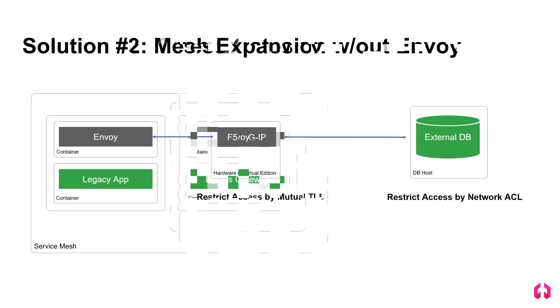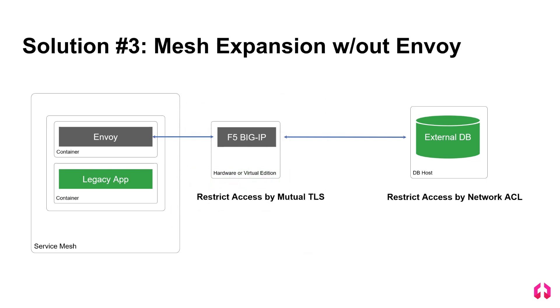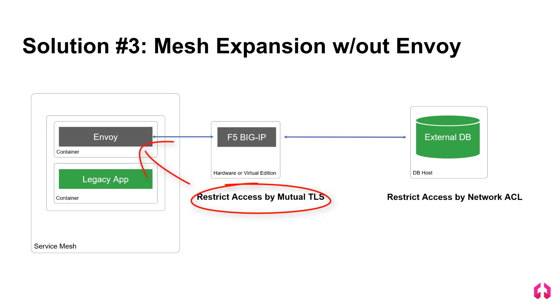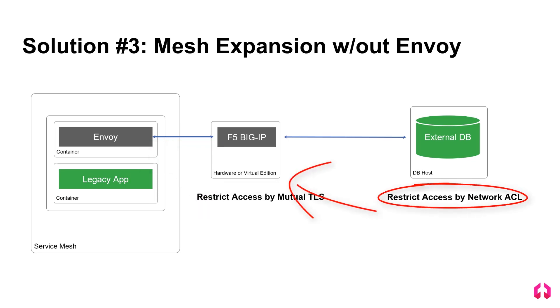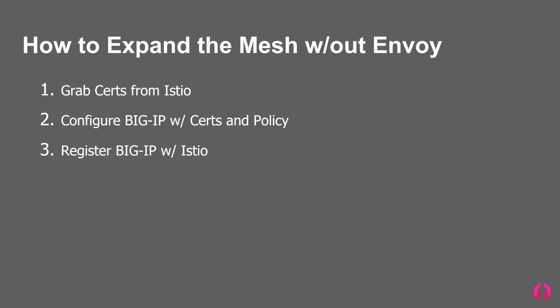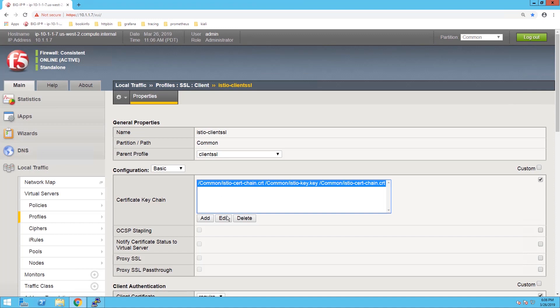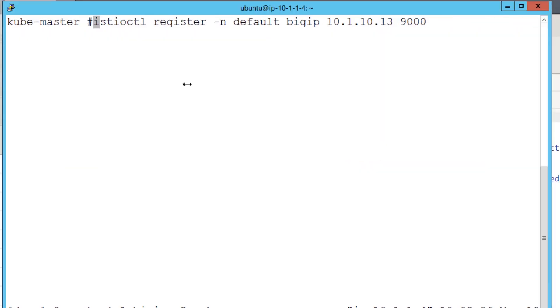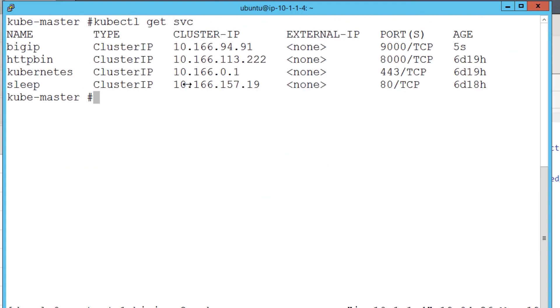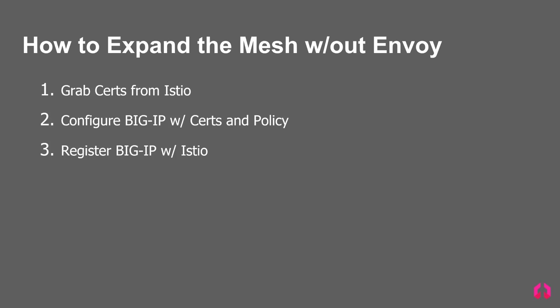The third option we will be talking about today is using mesh expansion without Envoy. In this scenario, we will be using certificates that are trusted by Istio and deploy them on an F5 BIG-IP. The BIG-IP will be able to validate the identity of the service using mutual TLS, and the database will be able to restrict access to the BIG-IP by a network ACL. In this demo, we will grab the certificates from Istio, configure the BIG-IP with the certificates and policies, and register BIG-IP with Istio, then look at the results of securely connecting from a trusted service while blocking an untrusted service.